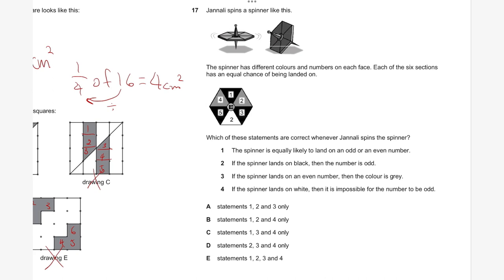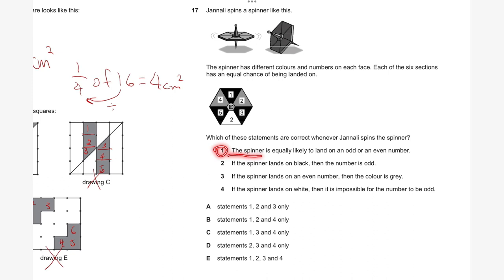Question seventeen. Beverley spins a spinner with six equal sections, each with different colors and numbers. Which statements are correct? Statement one: the spinner is equally likely to land on an odd or even number. Odd numbers: five, three, one — that's three. Even numbers: four, two, two — also three. So it is indeed equally likely. Statement one is correct.